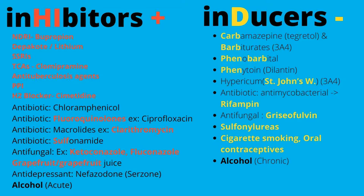Note that grapefruit juice and cranberry juice are inhibitors — so make sure patients aren't taking those with their morning meds, as they will alter medication levels. Nefazodone is an antidepressant that is an inhibitor. Alcohol appears in both categories: acute alcohol use is an inhibitor, while chronic alcohol use is an inducer. For inducers, I remember carb and barb together as siblings, which helps me recall phenobarb and phenytoin. St. John's Wort is the oddball, then rifampin (antibiotic) and griseofulvin (antifungal). Cigarette smoking and oral contraceptives are very common inducers — high-yield test questions.